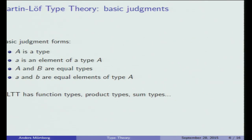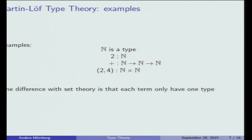In Martin-Löf type theories you have four basic kinds of judgments: you can say that A is a type, or that little a is an element of type A. Types come equipped with a notion of equality between types, and elements also come with a notion of equality. You also have function types, product types, sum types, and so on. For example, you'd say the natural numbers is a type, the number two is an element of this type — written with a colon — and the plus function takes two natural numbers and gives a natural number.